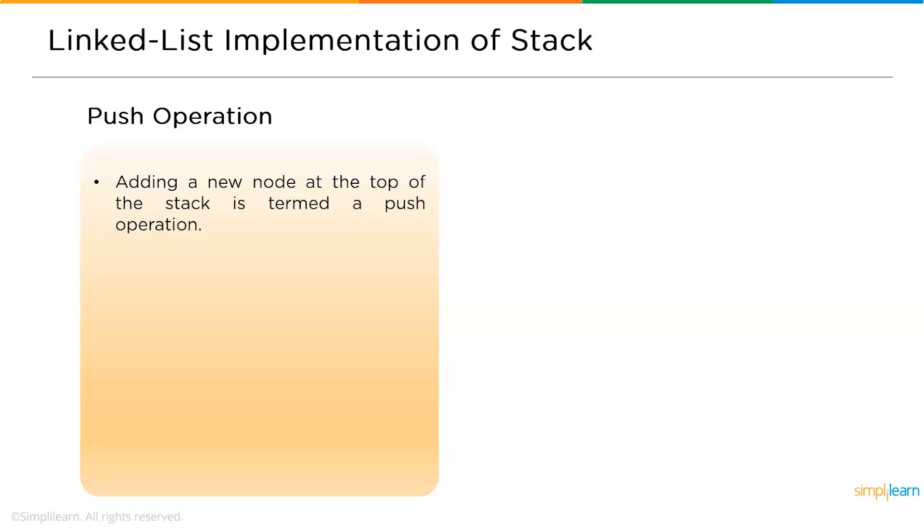Create a node first and allocate a new memory to it. If the list is empty and node consists of data and null is the address, it will be inserted as the first node.